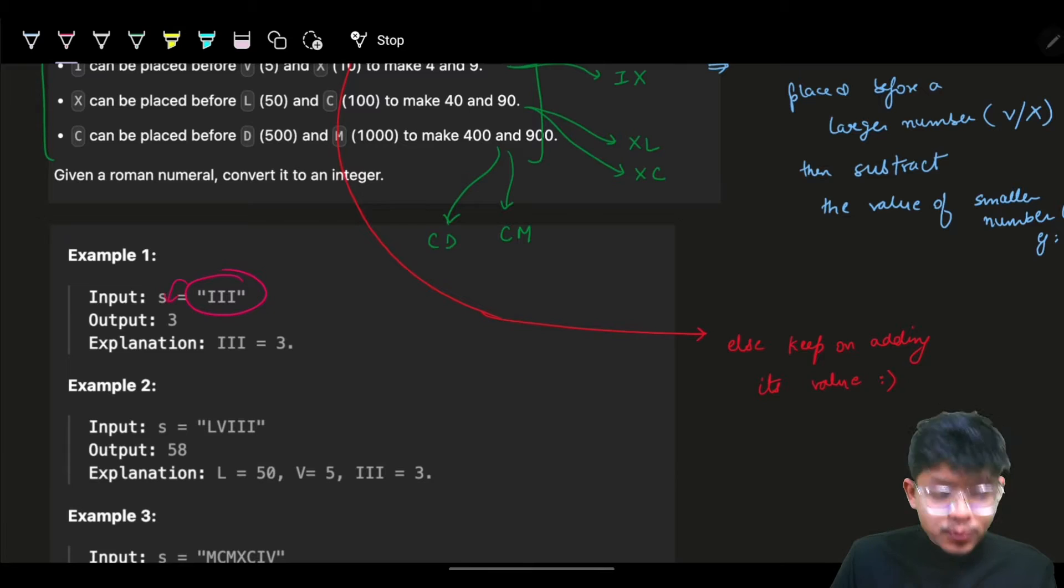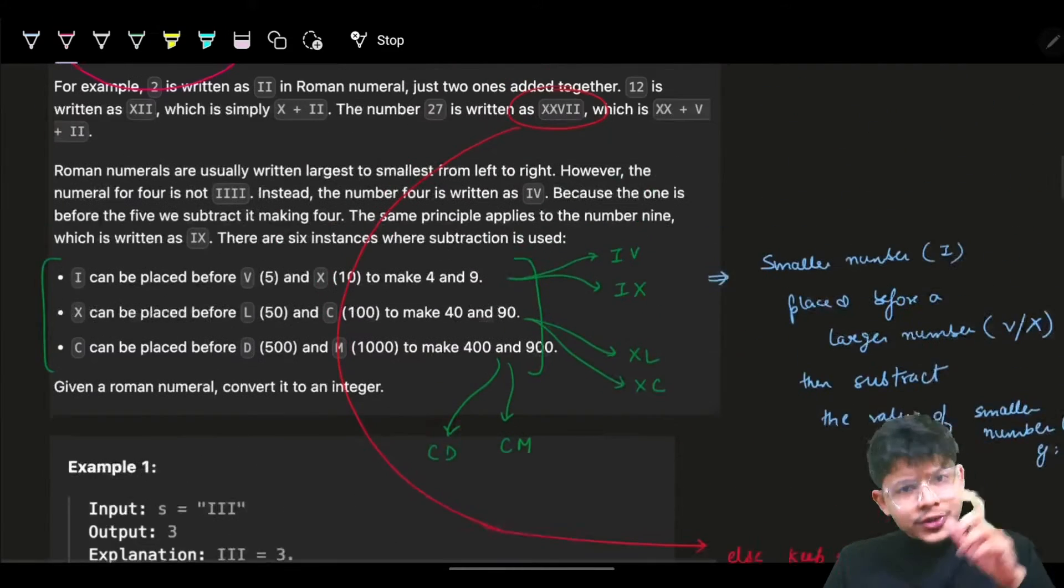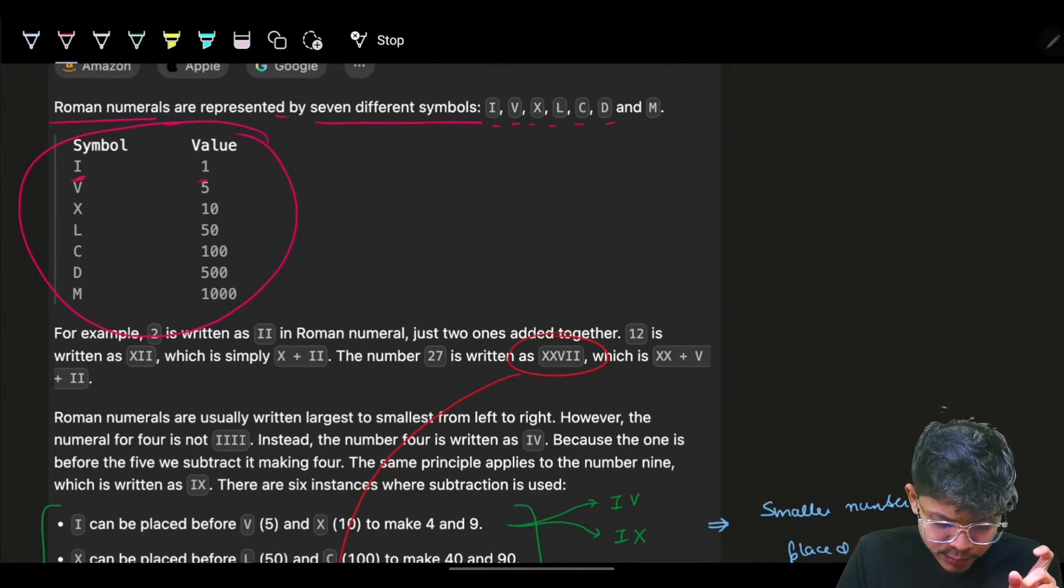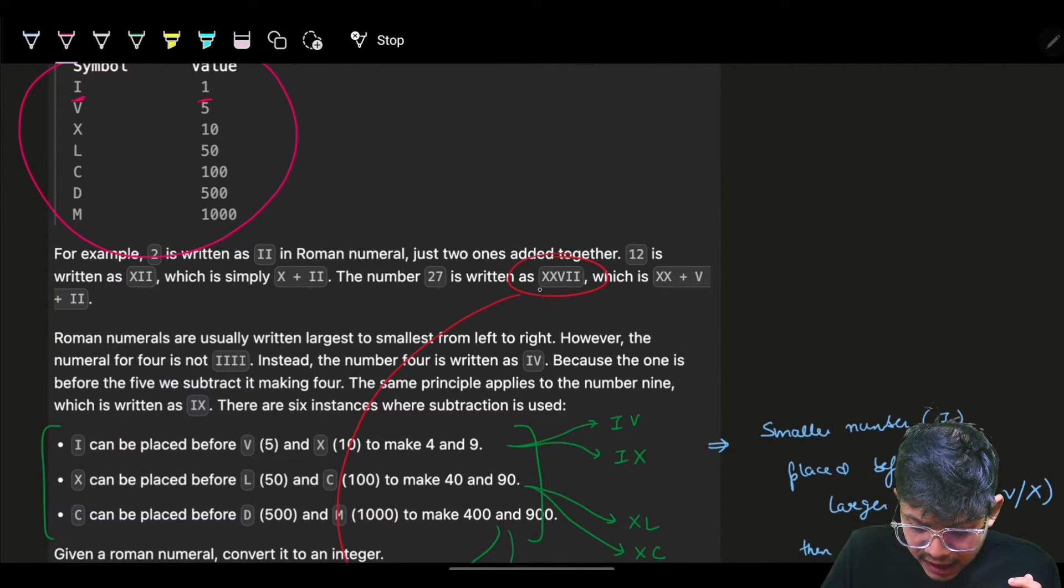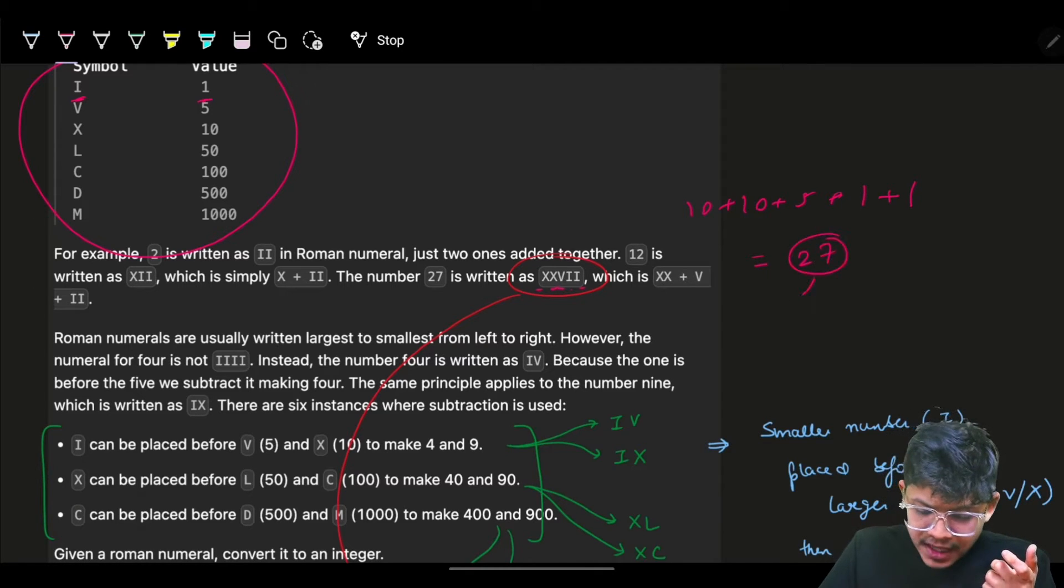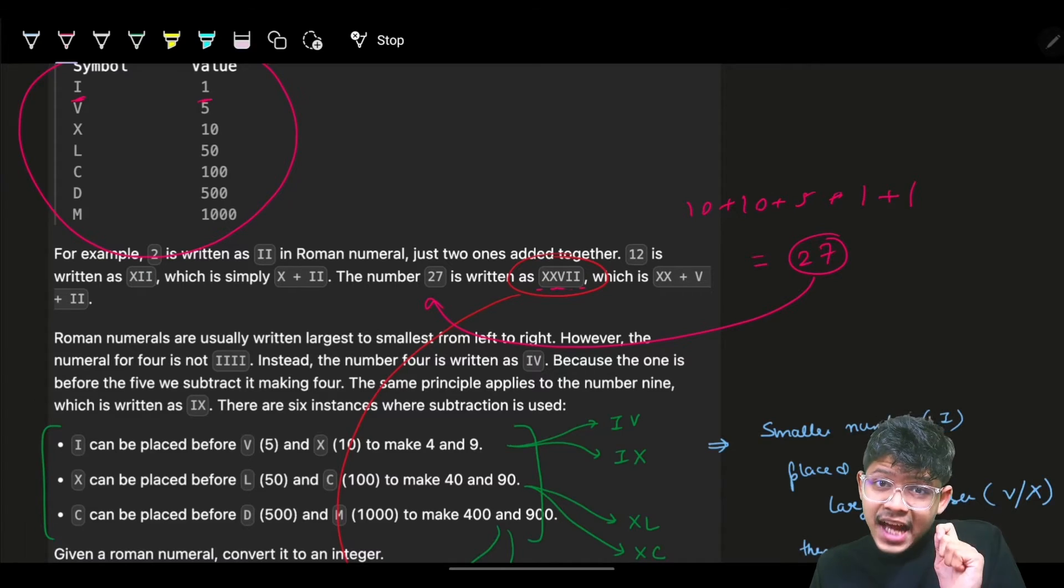The question says you'll be given some Roman numeral and you have to figure out the corresponding value. The mapping of a Roman numeral to the corresponding number is already given. For example, XXVII - X is 10, so 10 plus 10 plus V is 5 plus I plus I is 2, which equals 27. That's what they have also written, but there's a catch.